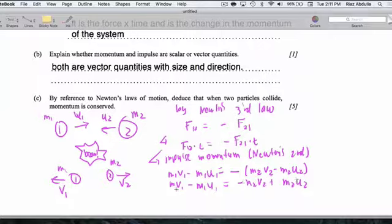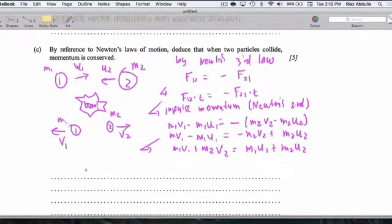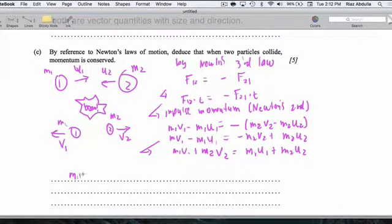Getting initial terms and final terms on each side, this leads us to M1 V1 plus M2 V2 equals M1 U1 plus M2 U2. Or we can rewrite it the way they like it, which is M1 U1 plus M2 U2 equals M1 V1 plus M2 V2.